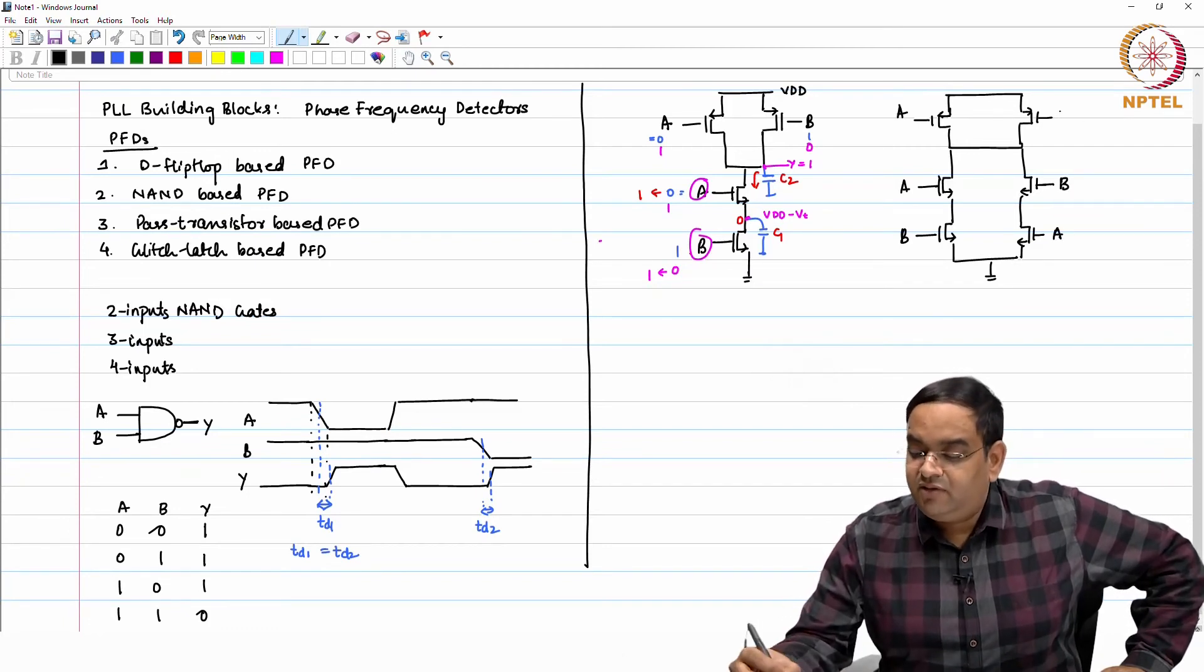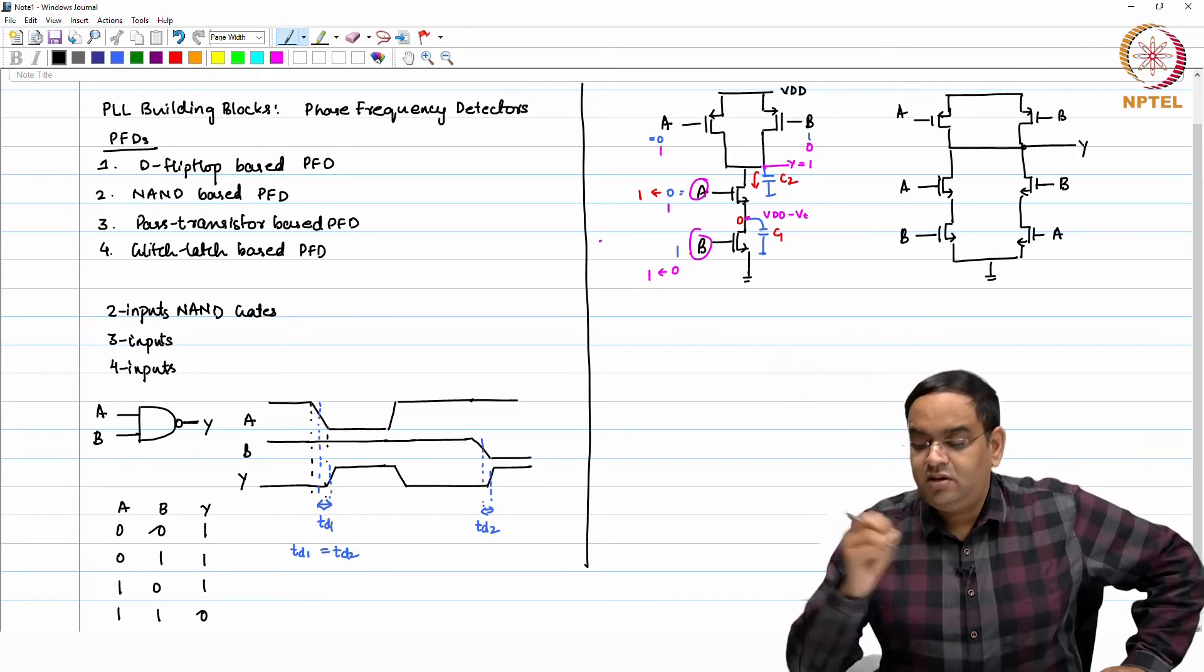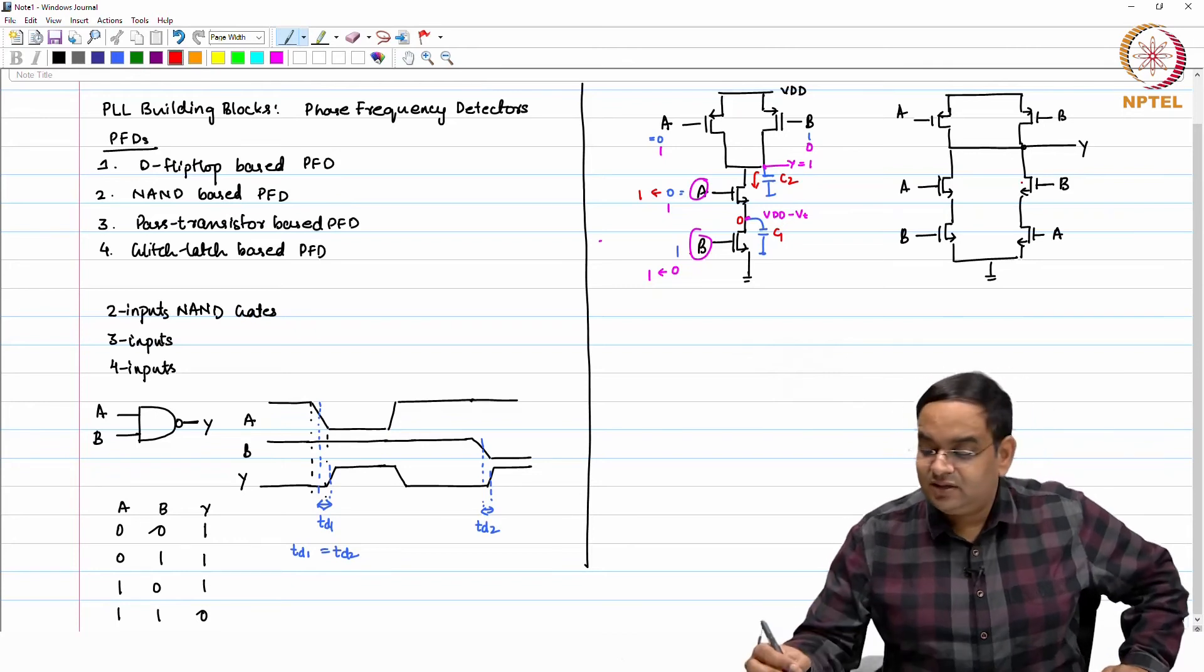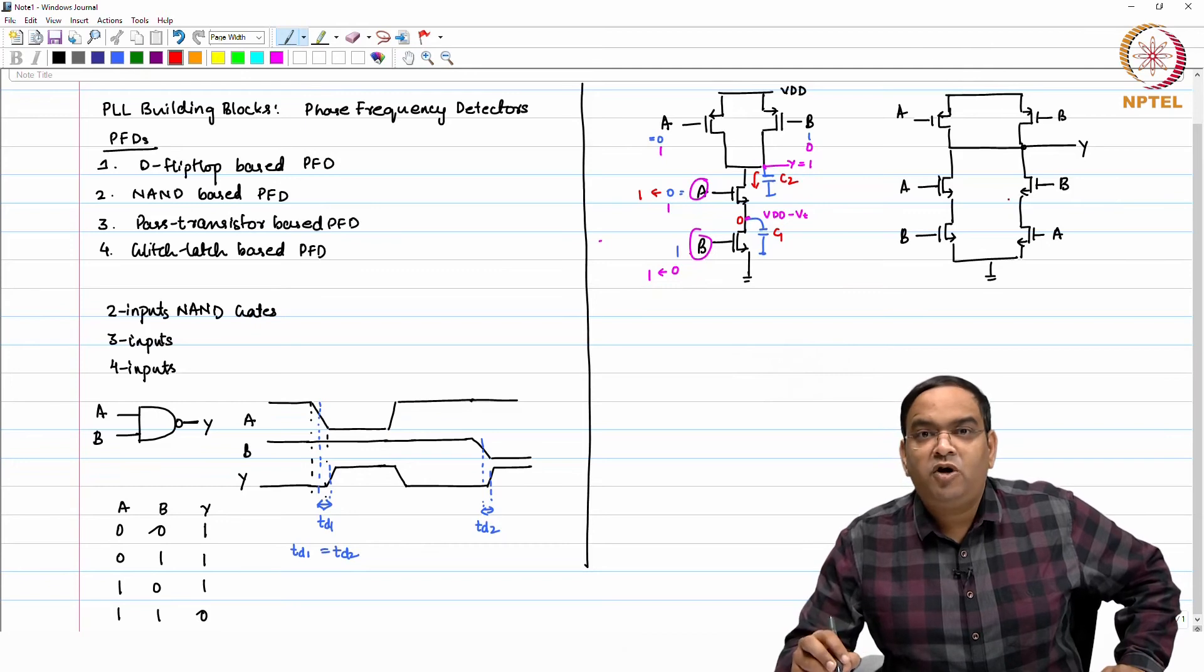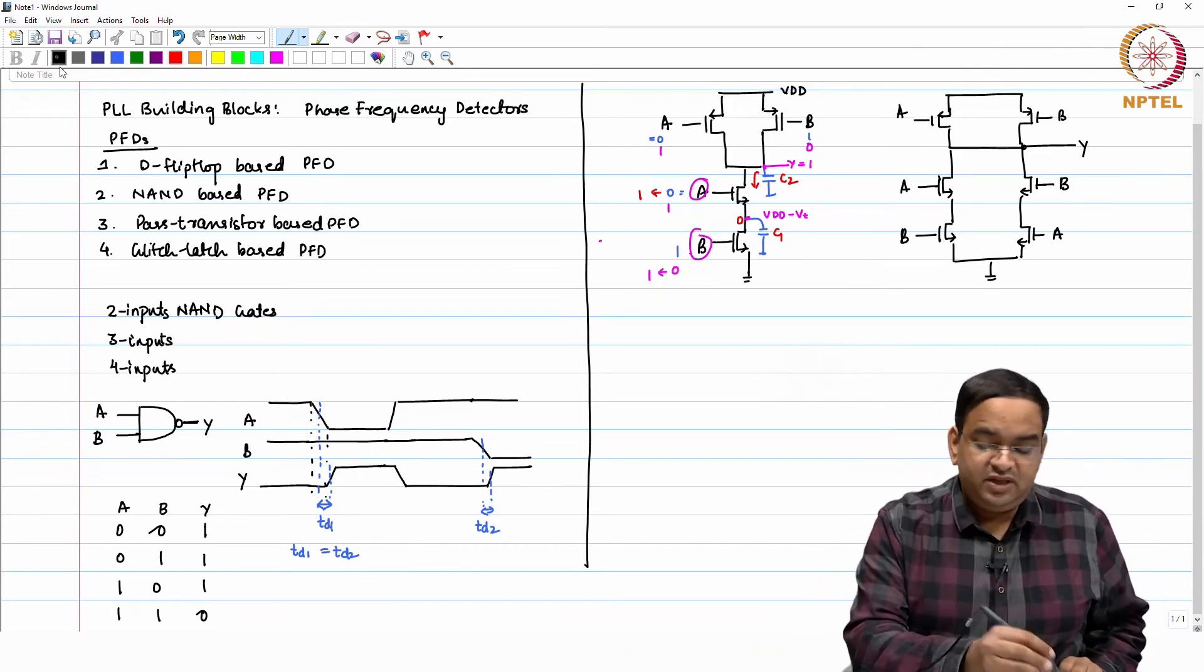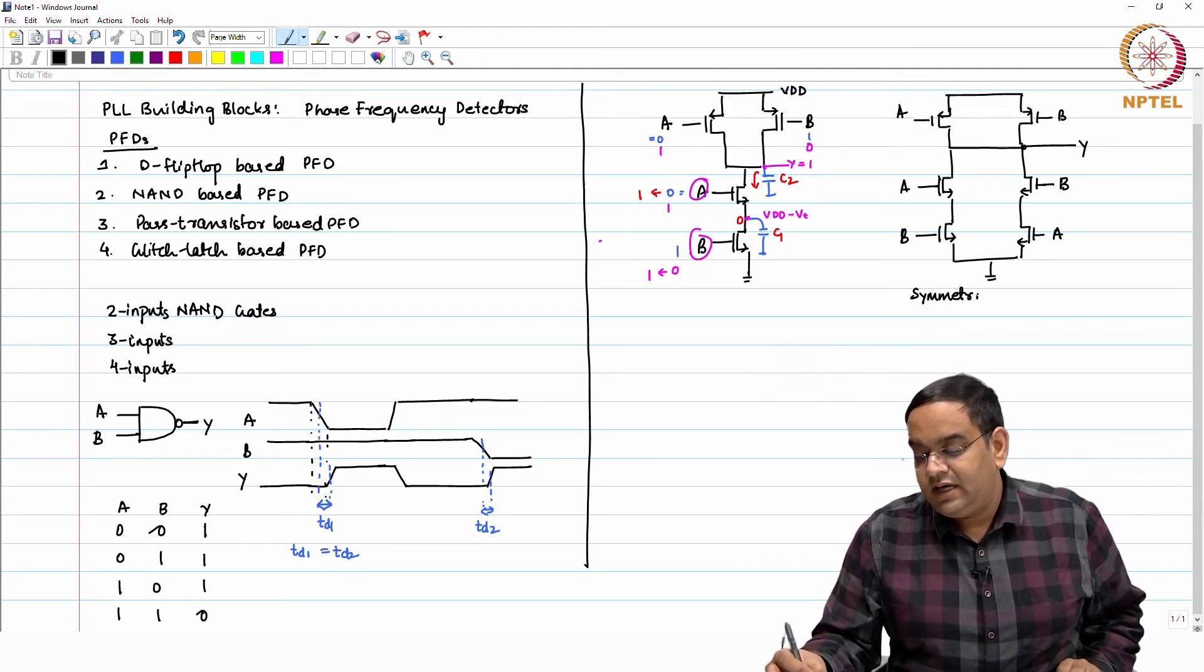They are both connected like this. Then if the transition is triggered at Y from high to low, whether A triggers the transition or B triggers the transition, it is going to be the same for A and B to output. You can say this is like a symmetric NAND gate.